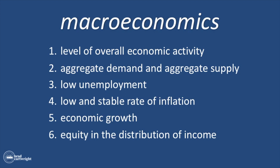The second unit of study is aggregate demand and aggregate supply. Don't get tripped up by the word 'aggregate' — it's just a fancy way of saying total. You look at the total demand and the total supply in an economy. Demand includes things purchased by consumers, businesses, and the government, as well as imports and exports. Supply looks at the total amount of goods and services produced. Together, these create an aggregate demand and aggregate supply diagram, which is the backdrop of all your studies of macroeconomics.